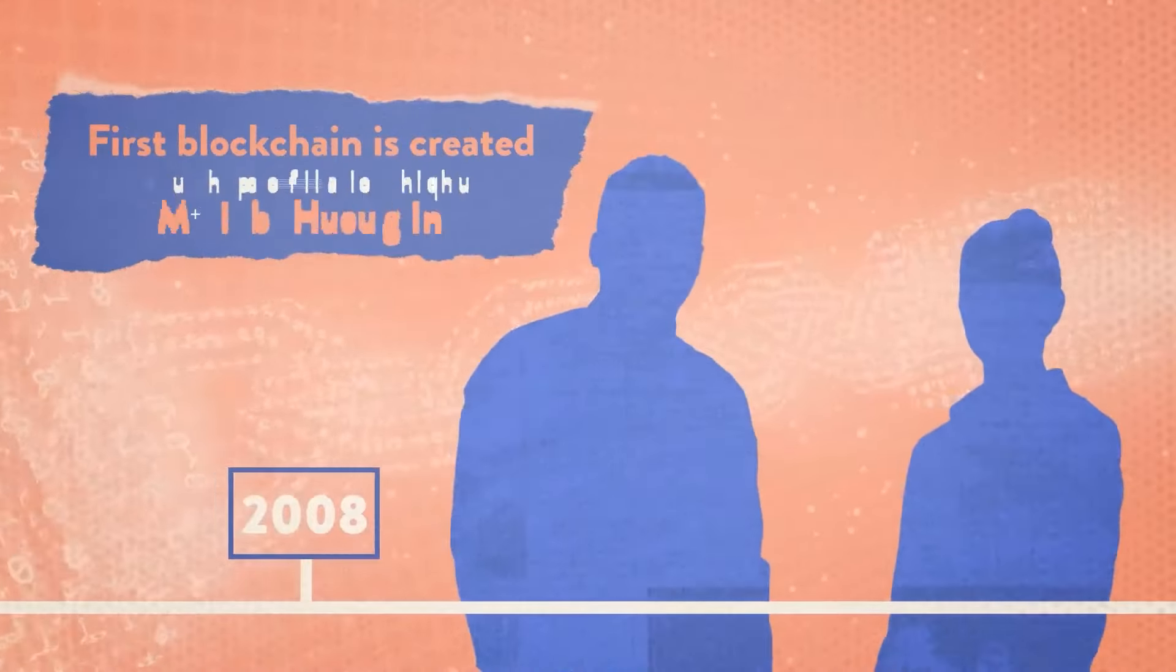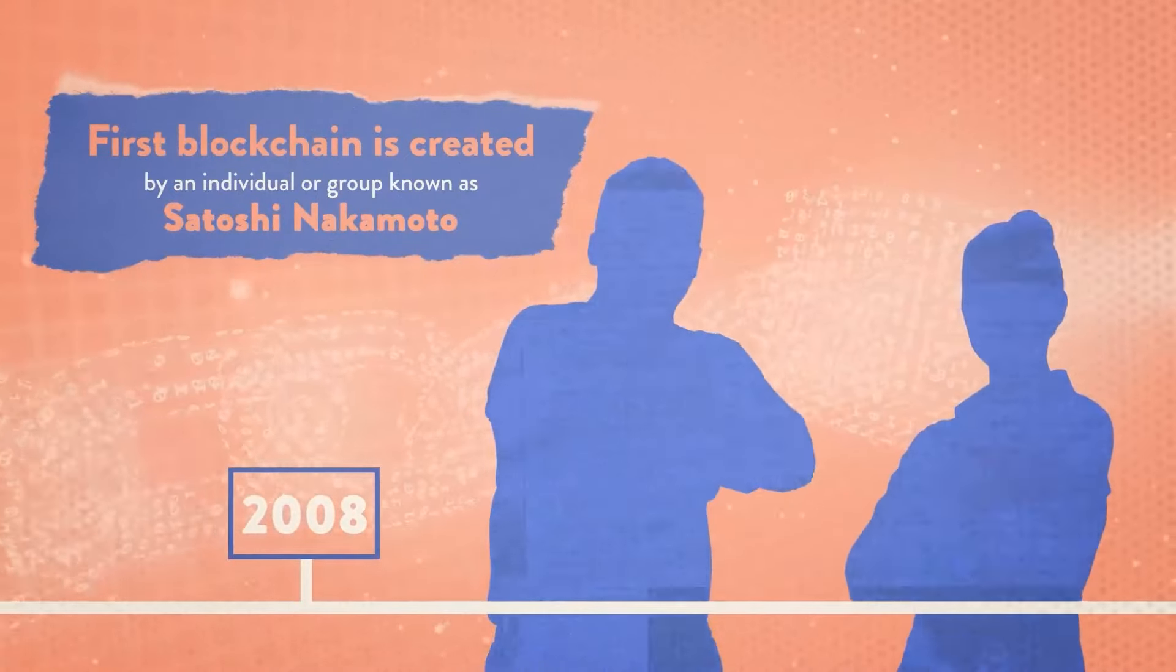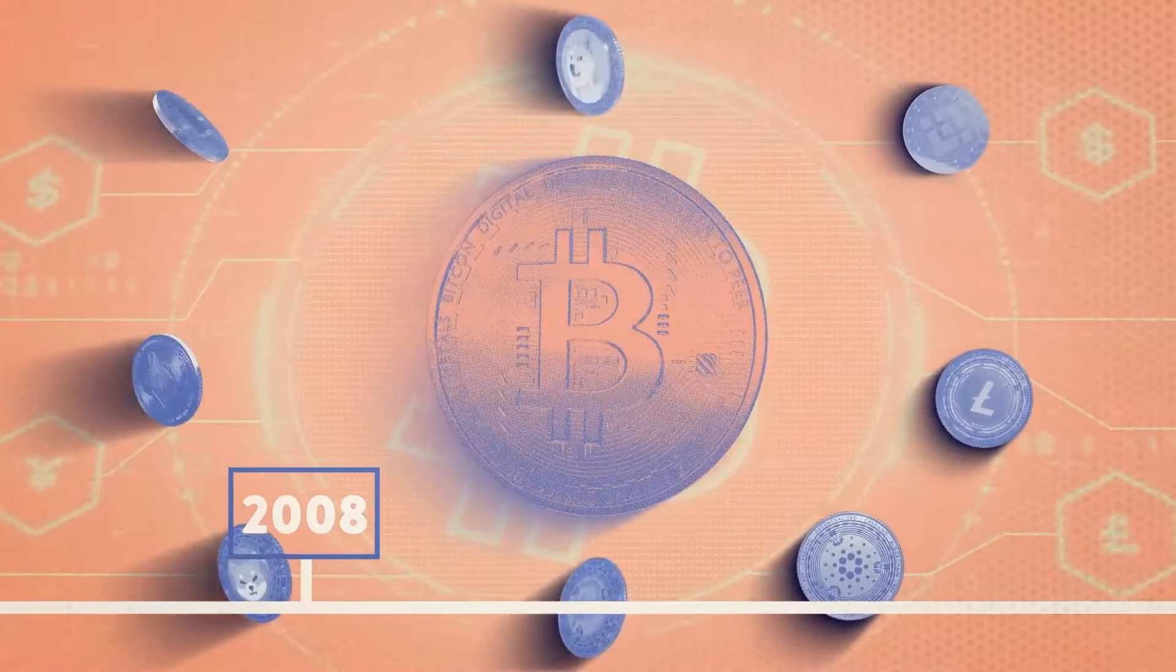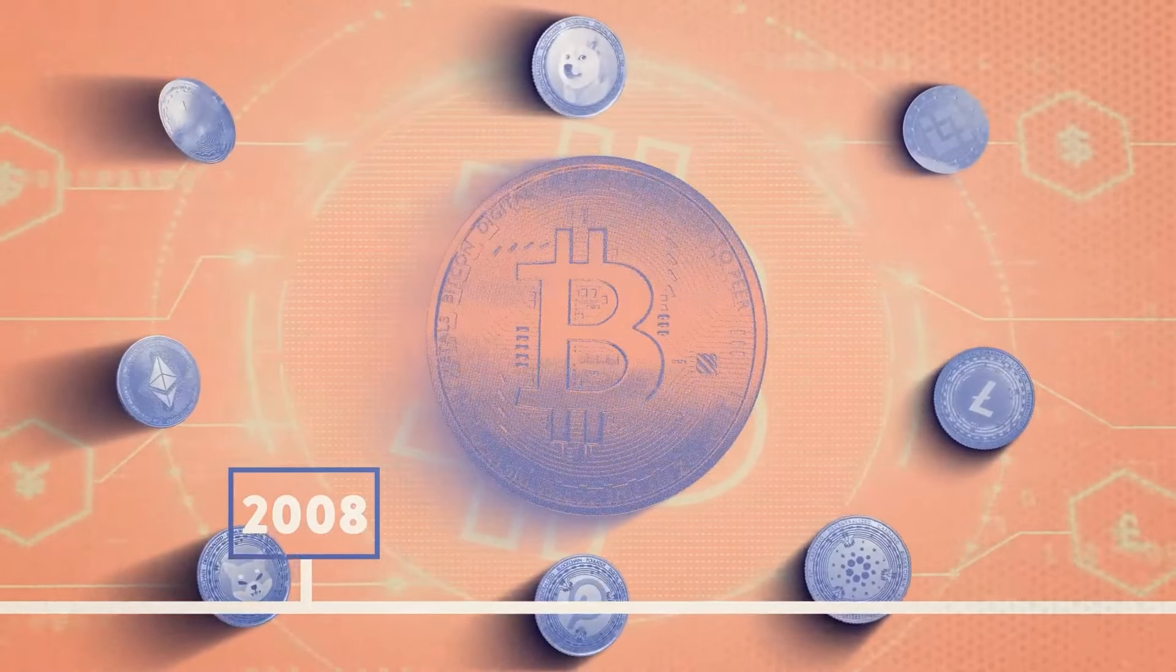2008. The first blockchain is created by an individual or group known as Satoshi Nakamoto, whose real identity is still a mystery to this day. This blockchain introduced the idea for Bitcoin, one of the first and most popular cryptocurrencies in the world.